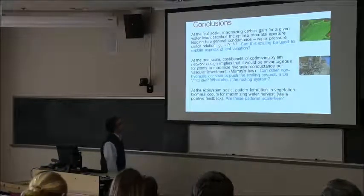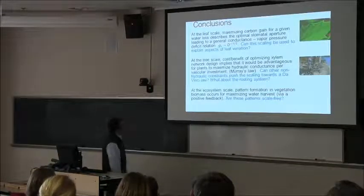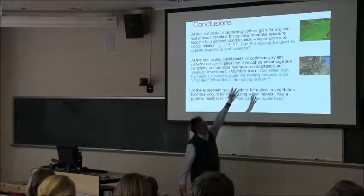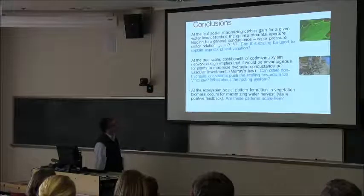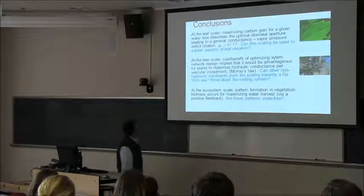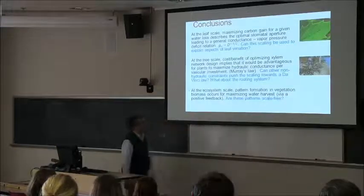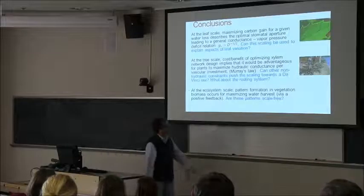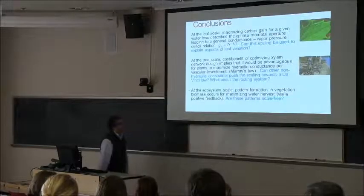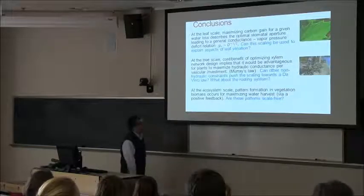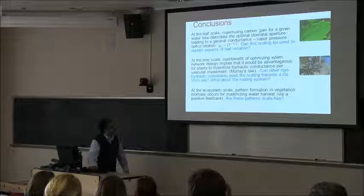So, to summarize, what we have done is we have shown that the leaf scale maximizing carbon gain for a given water loss seems to describe the optimal stomatal aperture reasonably well. It predicts correctly some scaling relation between stomatal conductance and vapor pressure deficit. But the next phase is to try to link the Lagrange multipliers to something more physical, like leaf venation theories. This is still an open problem. At the tree scale, we have shown that there is some interesting cost-benefit analysis that can be framed a la Murray's 1926 paper. But the question is can we extend this type of scaling to other pieces? What about the rooting system? This is a picture of the roots. Do they also follow Murray's law or Leonardo's law? And if not, why not? Are there really just structural differences that are preventing them? Or is there something more subtle about the hydraulics that we are not capturing? And finally, we looked at vegetation distribution on the landscape. And we have shown that, yes, vegetation does distribute to harvest the water very efficiently. But the issue of whether these vegetation patterning studies are scale-free or not remains to be explored further.